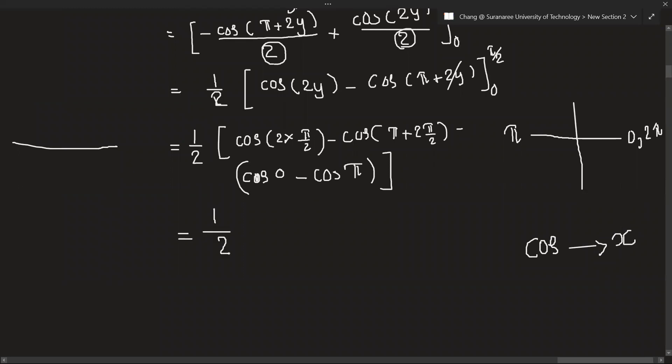So here, 1 over 2 into 2. These 2 will cancel out and the remain will be cos pi. So let's look here. The unit circle is 1, here is minus 1. Cos pi is here, minus 1. So we will get minus 1 here. So these 2 will cancel out.